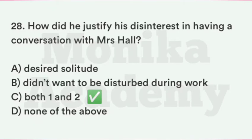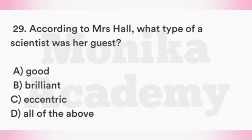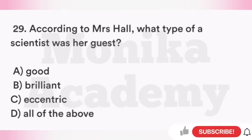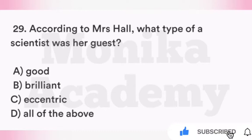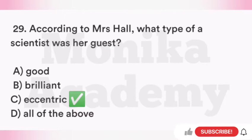Question 29: According to Mrs. Hall, what type of scientist was her guest? Option A: Good. Option B: Brilliant. Option C: Eccentric — unusual और uncommon type का व्यक्ति. Option D: All of the above. The correct answer is Option C, eccentric — Mrs. Hall के अनुसार जो scientist उनके यहाँ guest बनकर आया था वो एक बहुत unusual और uncommon type का व्यक्ति था.